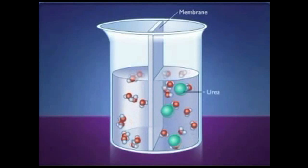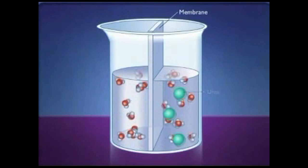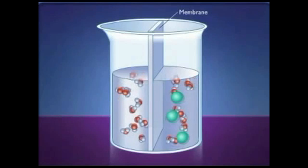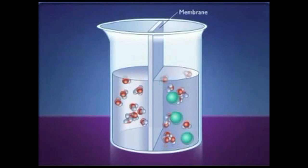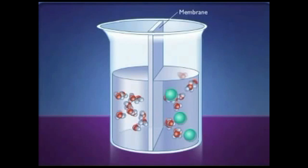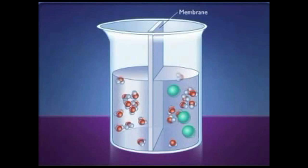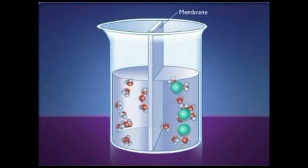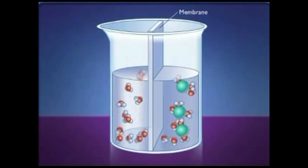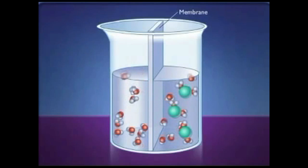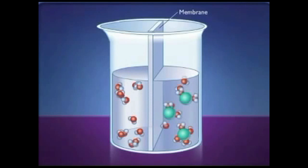If a molecule, such as urea, is added to one side of a membrane, it will not be able to diffuse across the membrane because it is both large and polar. Because of its polar nature, it will interact with other polar molecules, such as the water. This interaction reduces the number of free water molecules on the right-hand side.